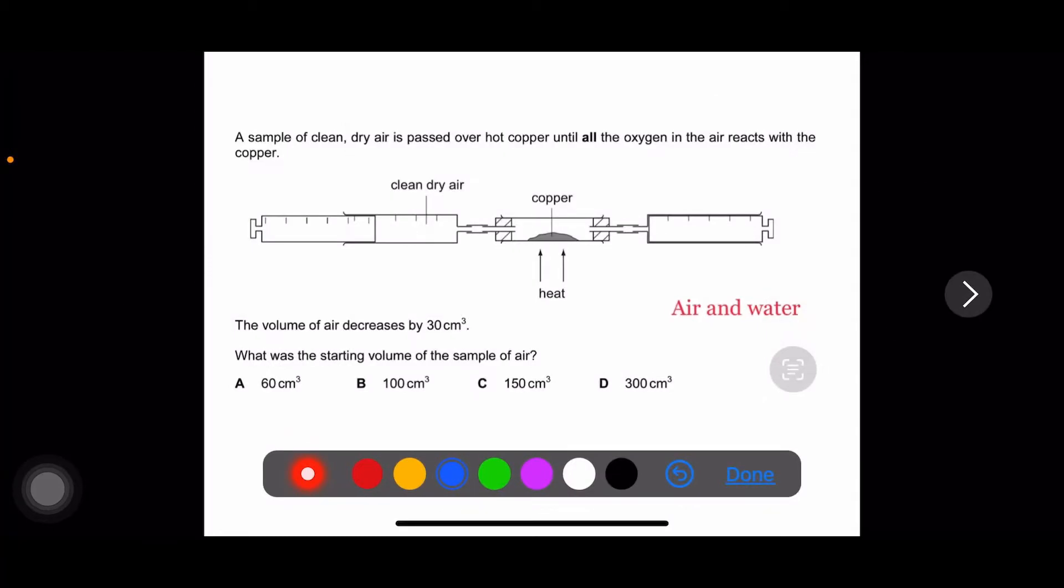Let us solve this question because it's a bit tricky. It says that a sample of clean dry air is passed over hot copper until all the oxygen in the air reacts with the copper. The volume of air decreases by 30 cubic centimeters. What was the starting volume of the sample of air?